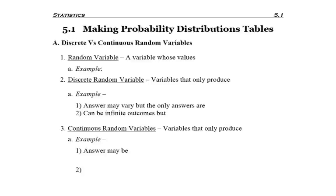Section 5.1 is on making probability distribution tables, but before we do that we need to be reminded of discrete and continuous random variables.